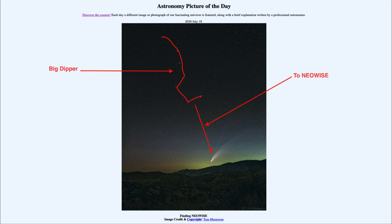You would see it nowhere near as bright as you're seeing in this image, simply because the camera can take a longer exposure and bring out far more detail than your eye can possibly see. So don't expect to see it like this, but you can definitely see the comet and its tail stretching back.